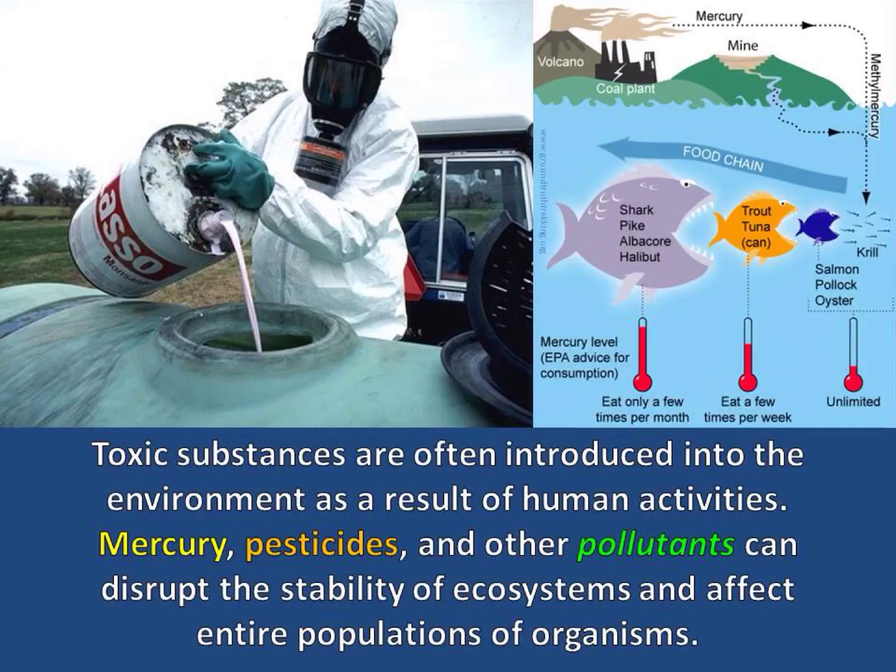Toxic substances are often introduced into the environment as a result of human activities. Mercury, pesticides, and other pollutants can disrupt the stability of ecosystems and affect entire populations of organisms.